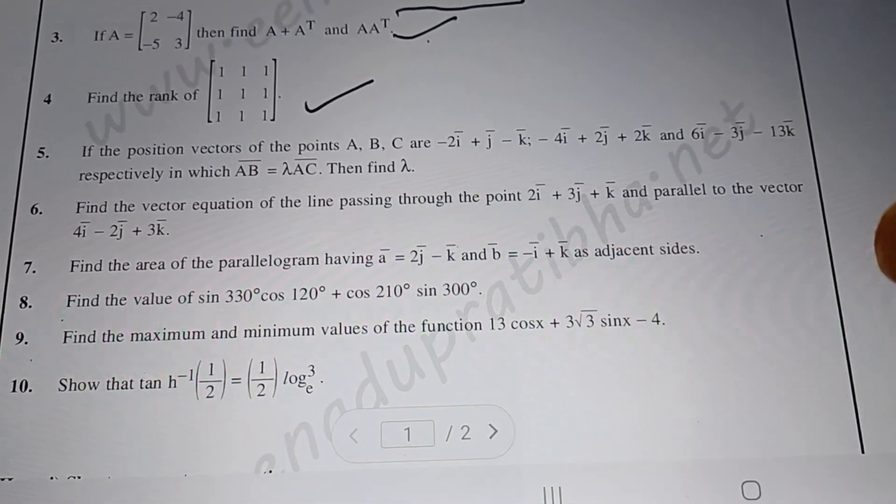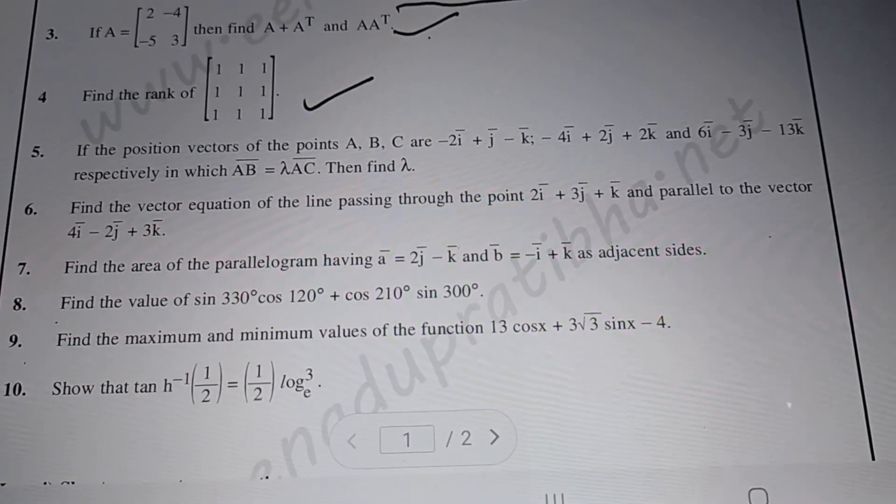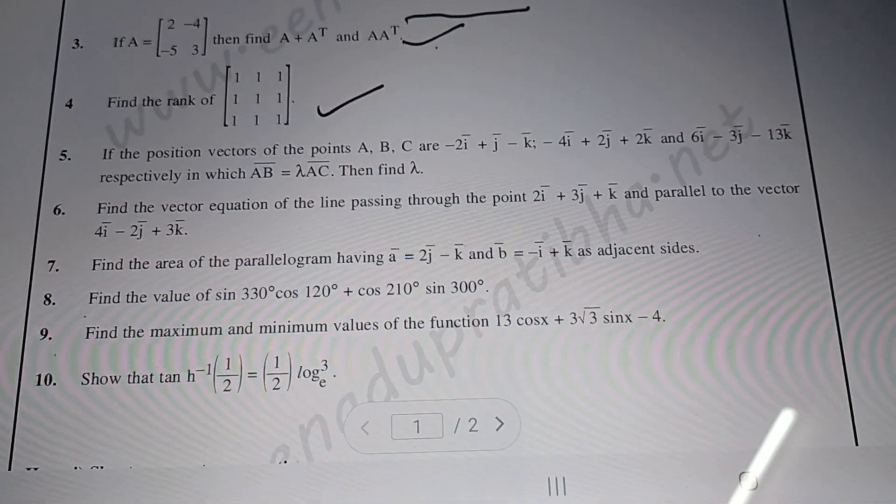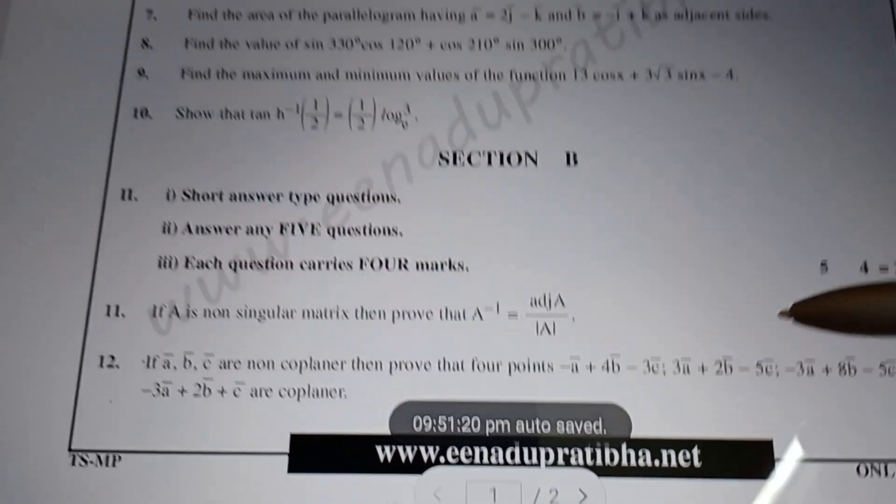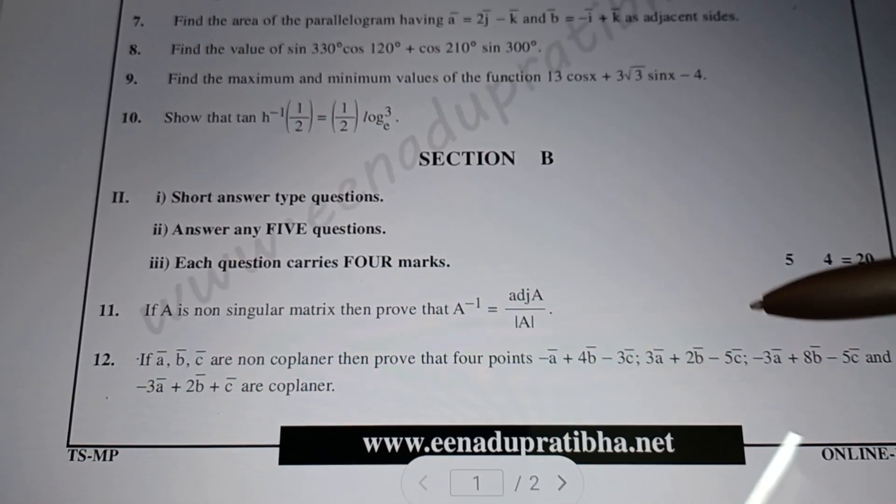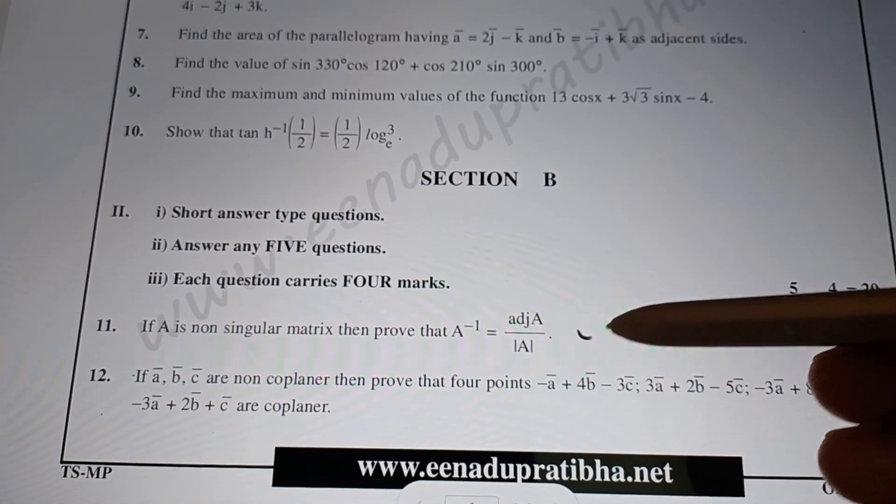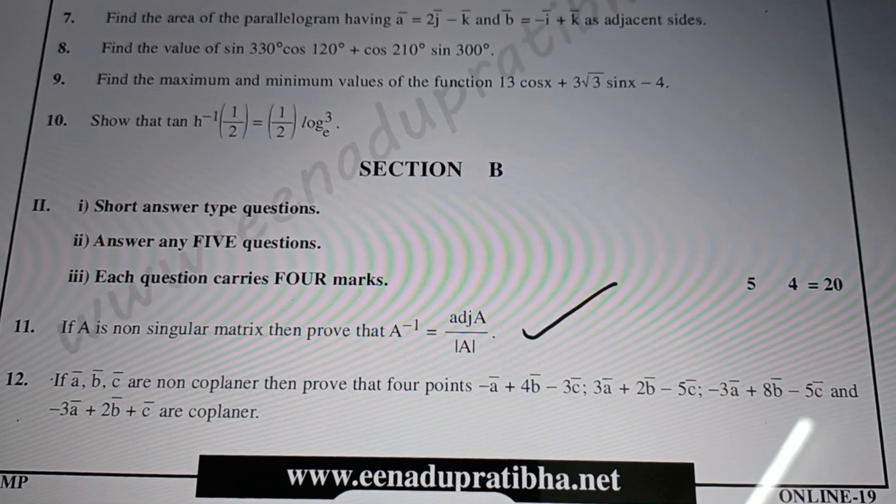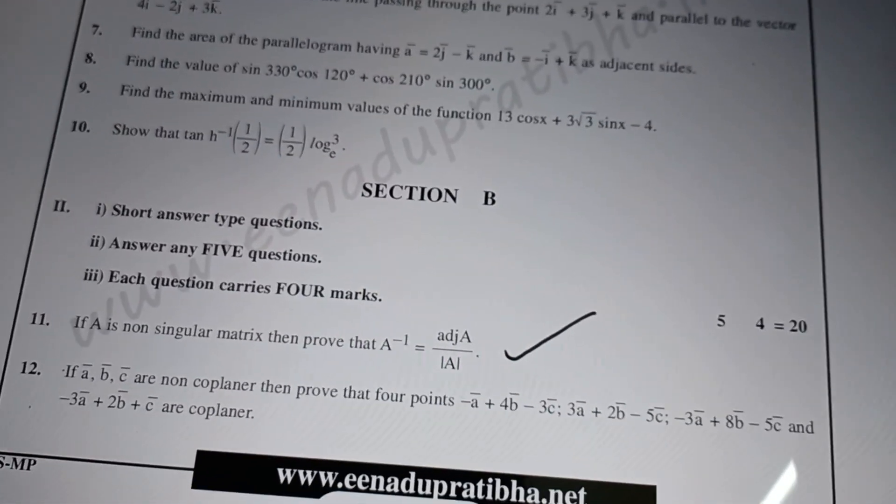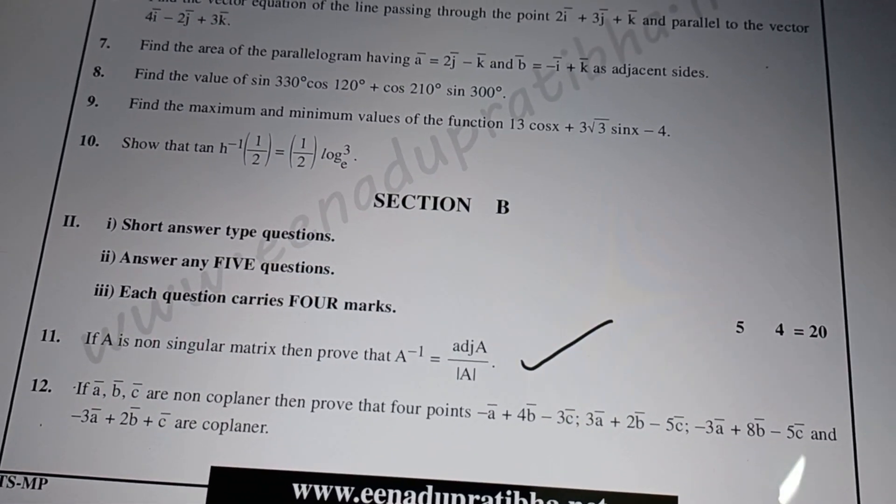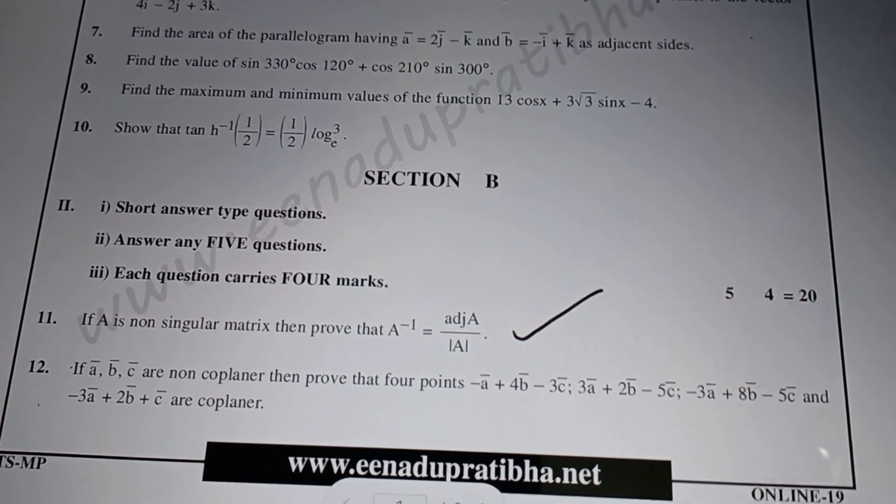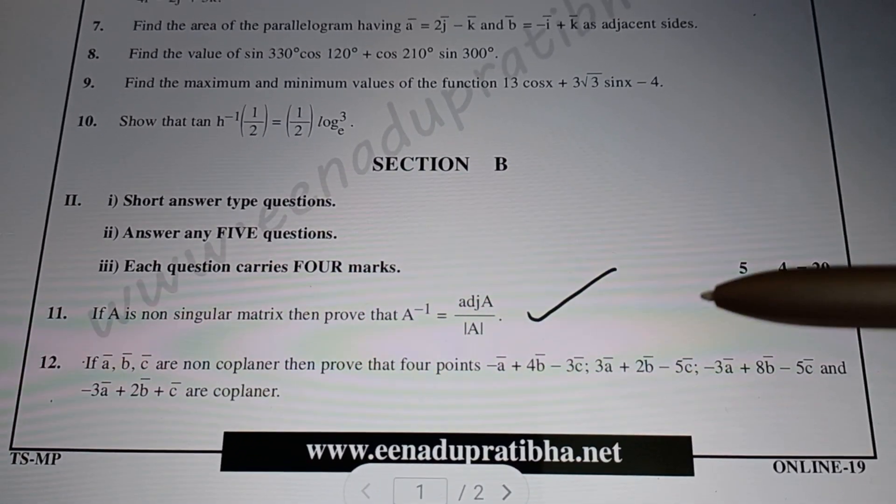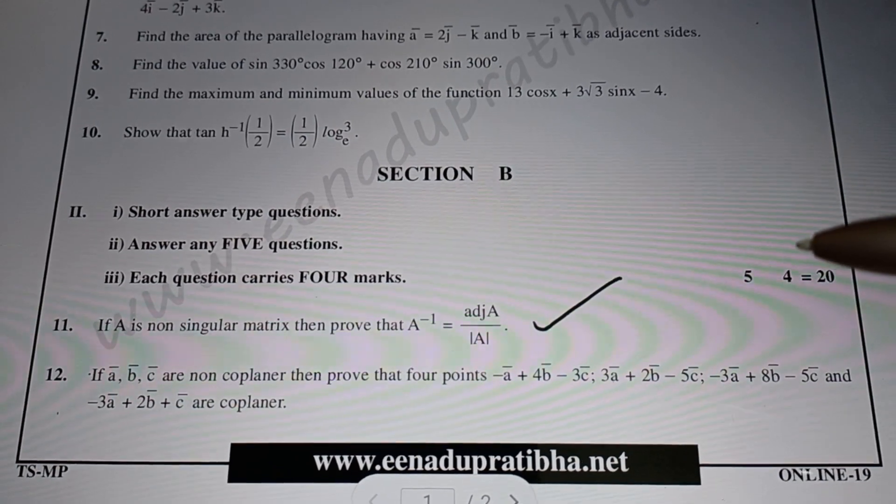Now let's look at Section B with four mark questions. The marks breakdown is: 2 marks times 10 equals 20, and 4 marks times 7 equals 28. The 11th question, worth 4 marks, is always on matrices.